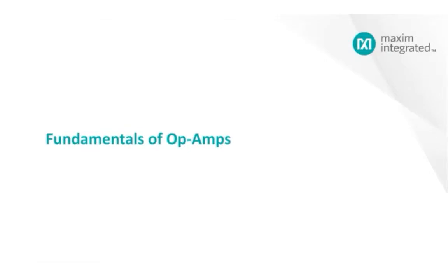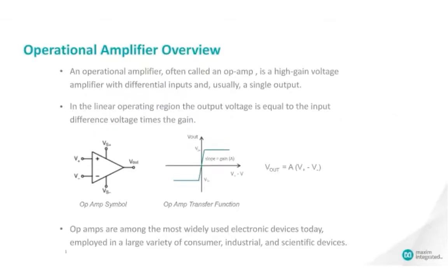In this course, we'll provide an overview of operational amplifiers and a discussion of important criteria for selecting an op-amp for an application. In general, an operational amplifier is a high gain voltage amplifier with a positive input, a negative input, voltage supply pins, and an output. It can be configured for many different operations, thus the name operational amplifier, or op-amp.